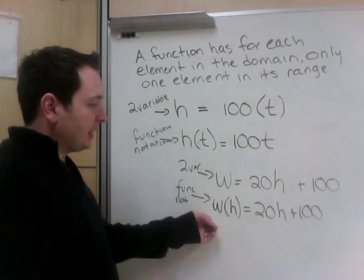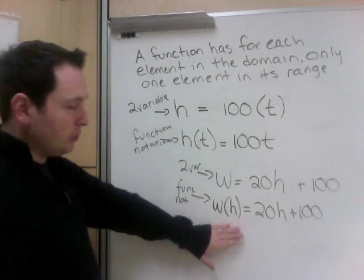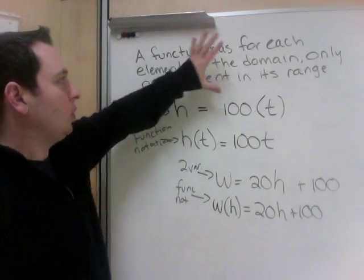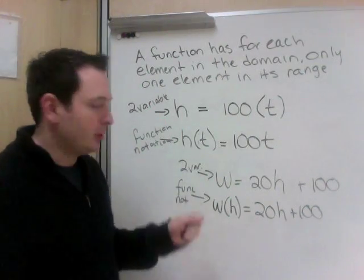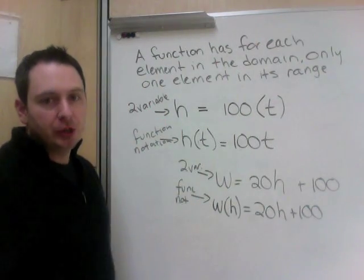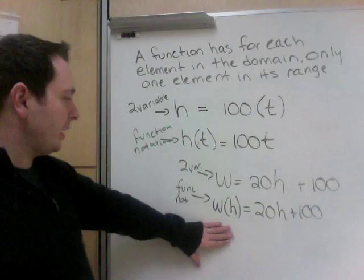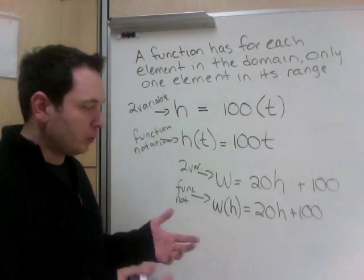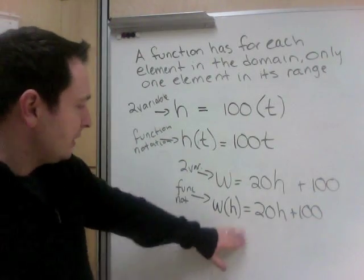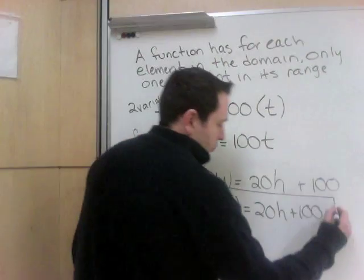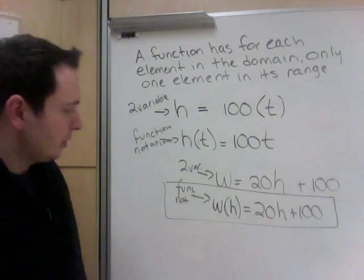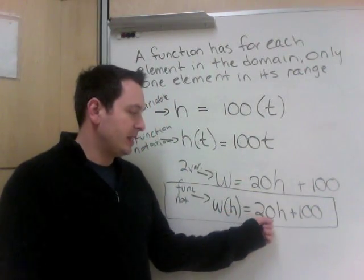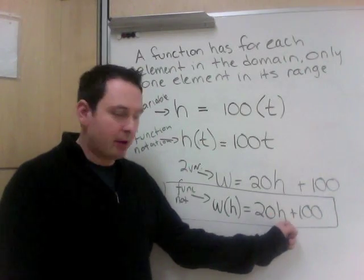Function notation is always brackets. This is w of h equals 20h plus 100. Here, it's w equals 20h plus 100. Two variables because all there is is two variables, a w and an h. Function notation because you're getting this bracket, which is w of h. One reason we like this notation is because when you see this notation, you know it's a function. You don't have to think about the definition. When you see function notation, you know it already is.